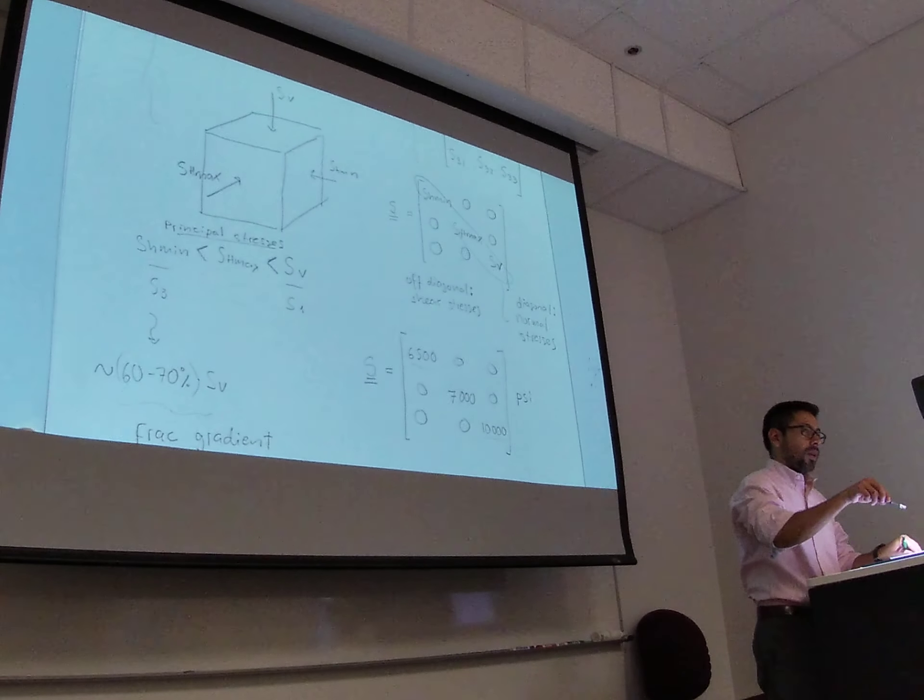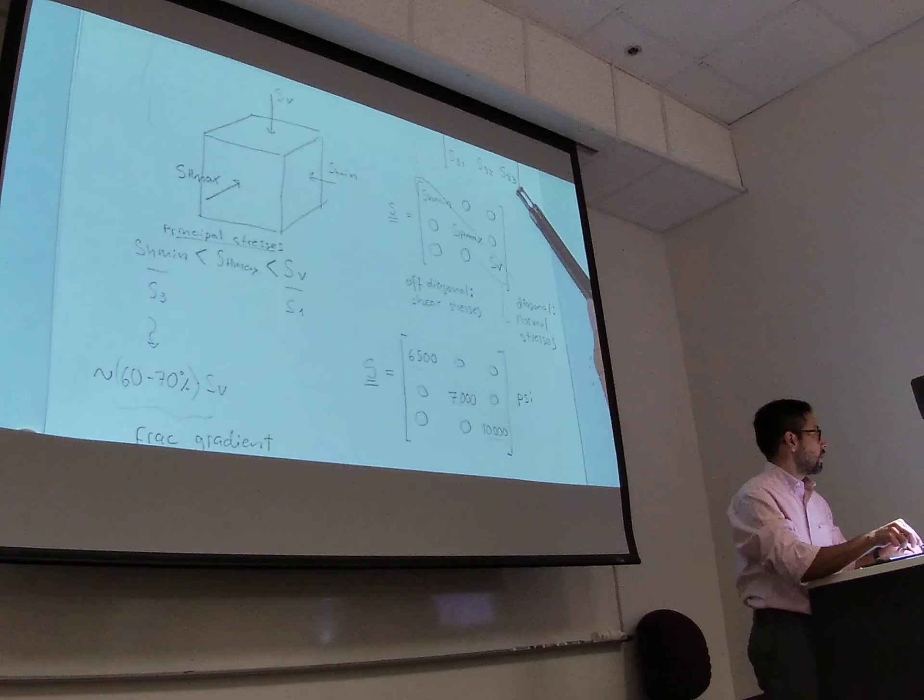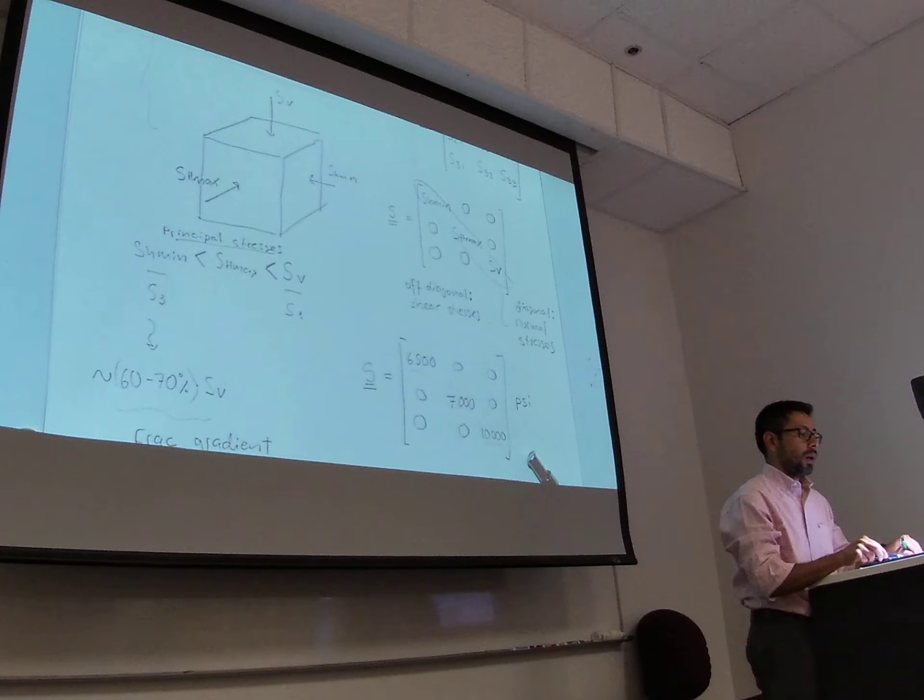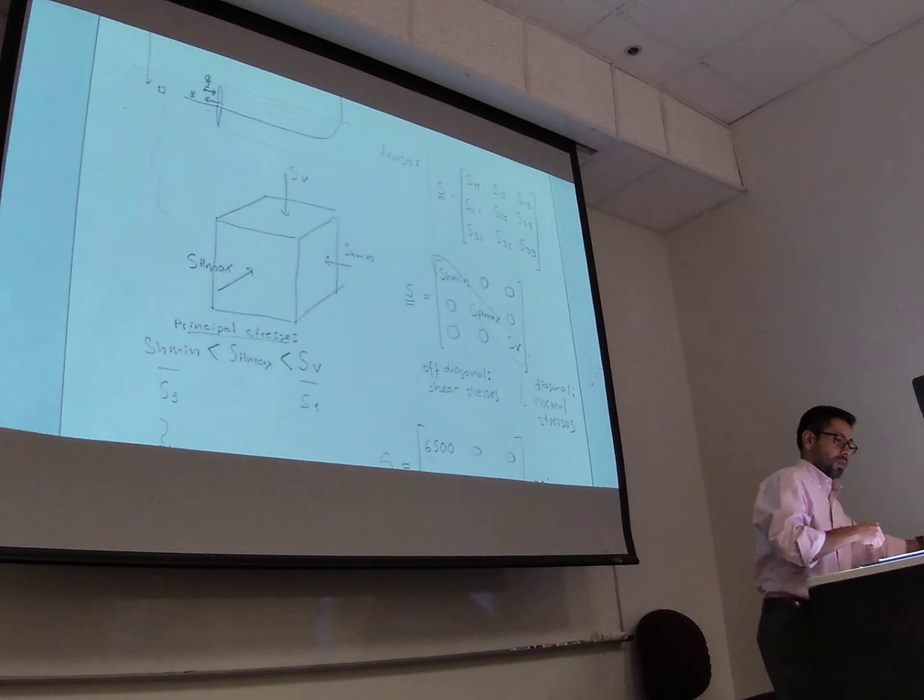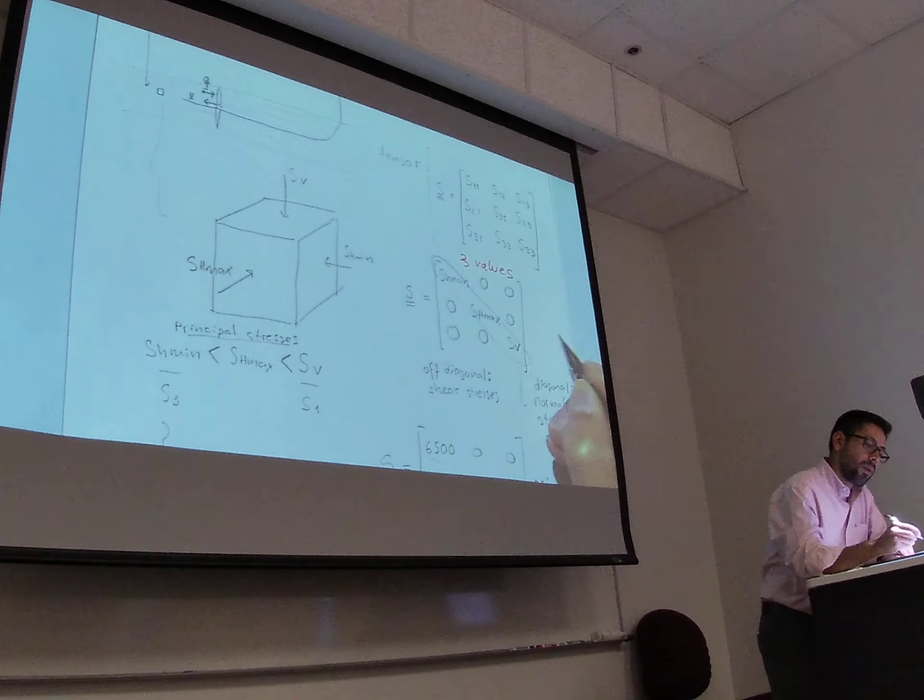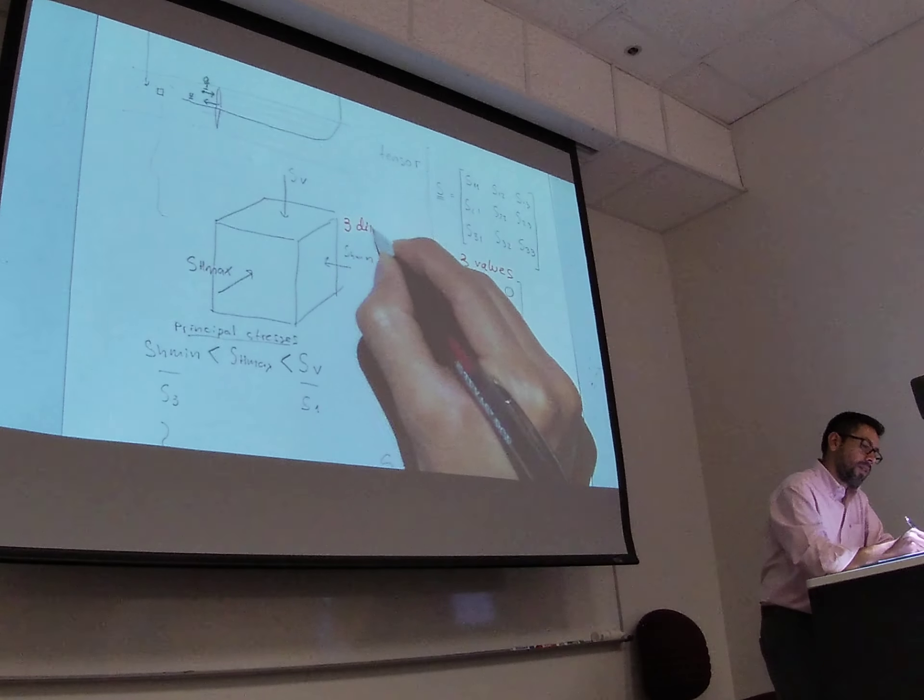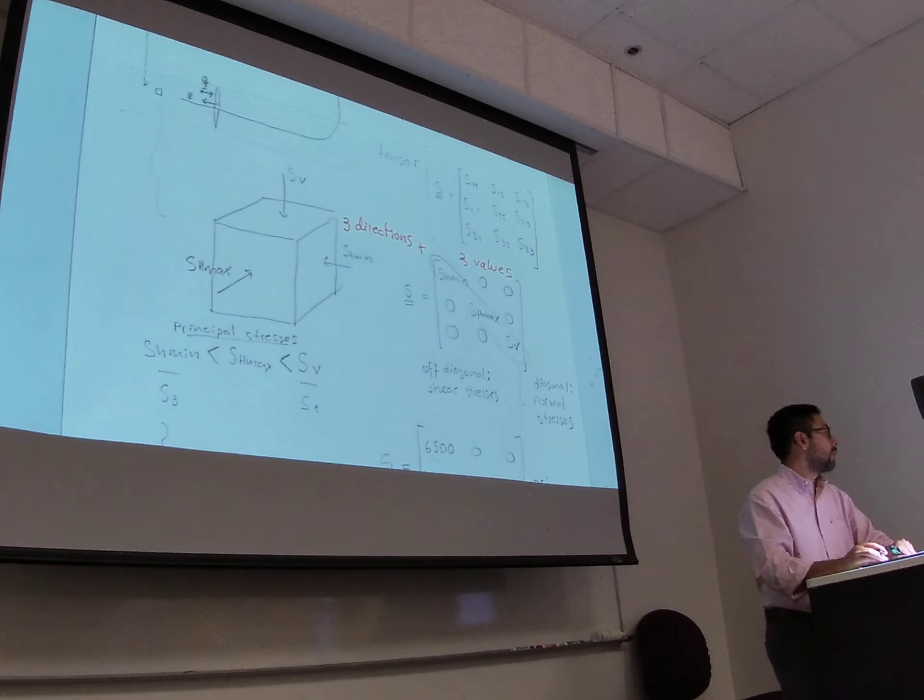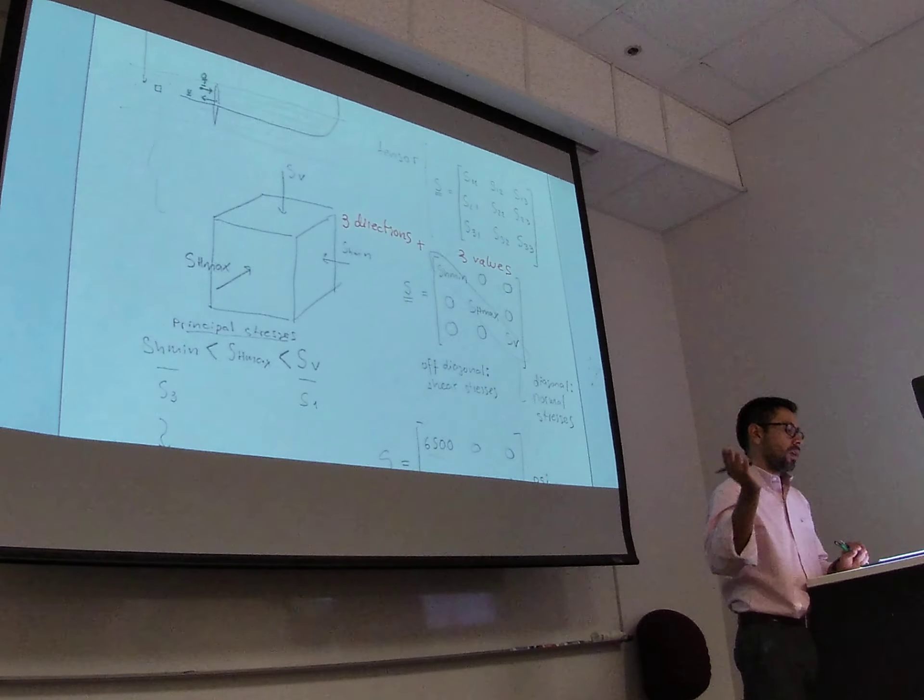All right, so in order to fully describe the state of stress at a particular location, we're going to need these tensors. We need three values which are independent from each other and also very important. We need three values but also we need three directions and they are all independent. And at the end, we're going to need six independent quantities, three values and three directions.